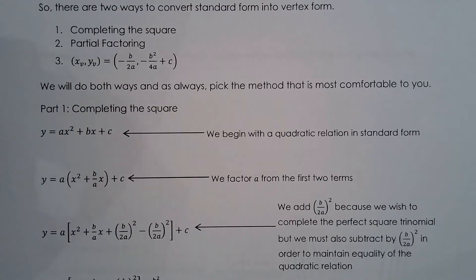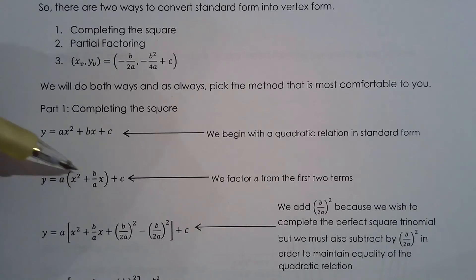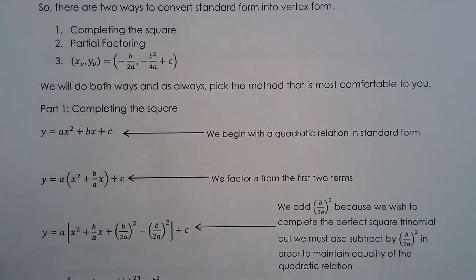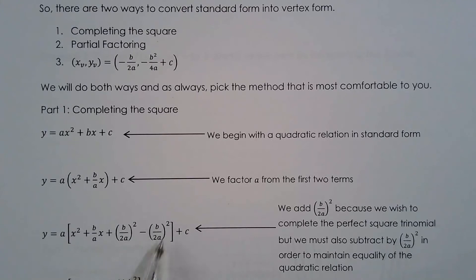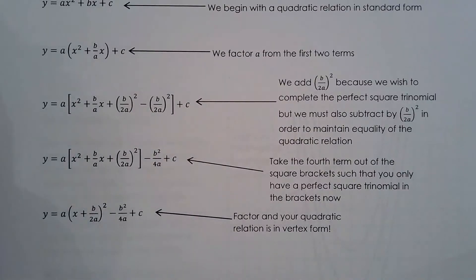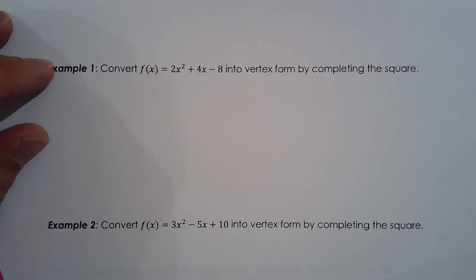So how do you complete the square? You factor a from the first two terms, then you complete the square — you want to create a perfect square trinomial. You add (b/2a)², but since that changes the function, you also subtract by it. Since you only really want the perfect square trinomial, we take the fourth term out of the brackets, multiply by a, then factor and simplify to get the equation in vertex form.